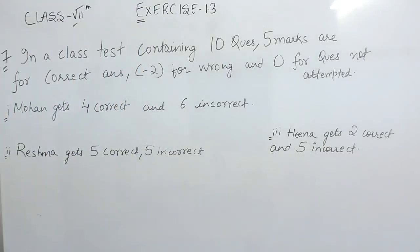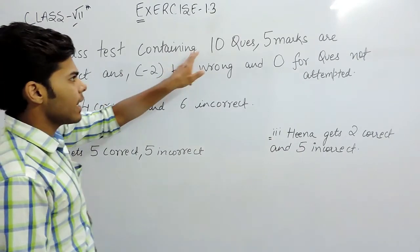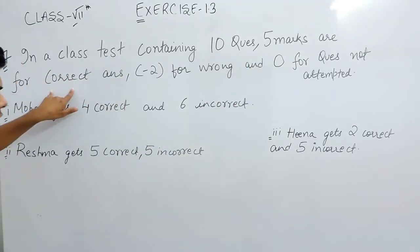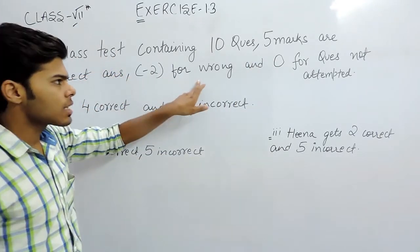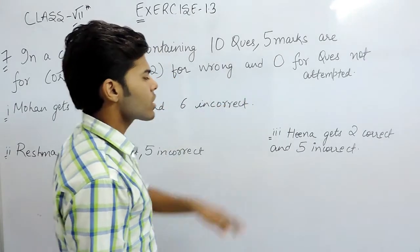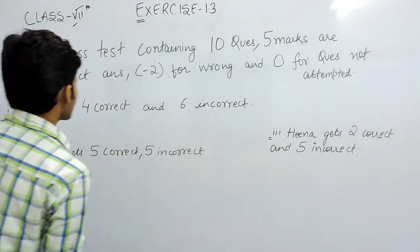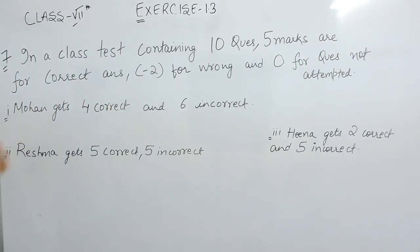Hello friends, now we will solve the second question of exercise 1.3. This question says that a class test contains 10 questions, out of which 5 marks are given for correct answer, minus 2 for wrong answer, and 0 for questions not attempted. In these three parts, we have to calculate the total score achieved by these people.